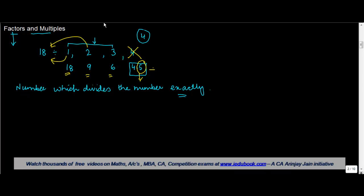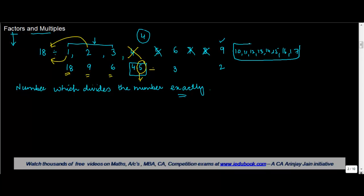So which are the other numbers which divide 18 exactly? 5 — no, because you will again get a decimal answer. 6 — yes, because 18 divided by 6 gives you 3. 7 and 8 similarly do not divide 18 exactly. 9 — yes, because 18 divided by 9 gives you 2. And 10, 11, 12, 13, 14, 15, 16, and 17 do not divide 18 exactly. Whereas 18 divides 18 exactly, giving 1.